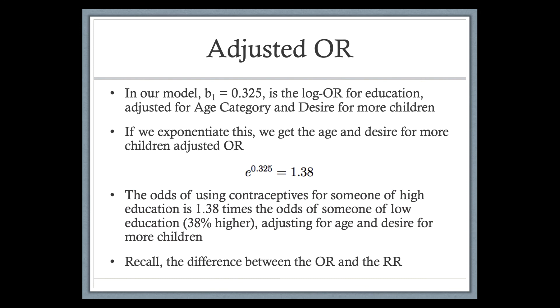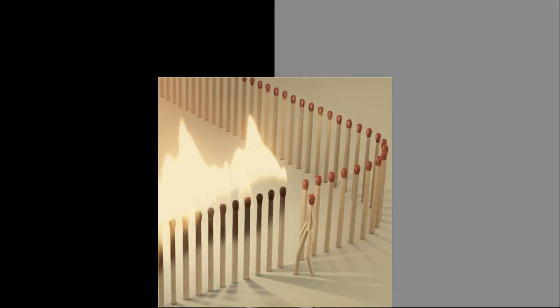So that's what we mean by adjusting for age and desire for more children — if those variables are the same for both people and only education differs, that's how they compare.